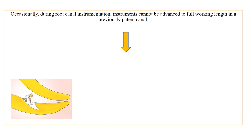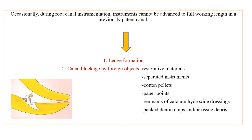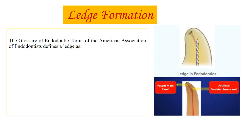You must have seen that when you are doing your root canal treatment, sometimes the instrument is going to the correct working length, but later on after two or three files your file is not advancing to its full working length. The cause could be ledge formation or canal blockage by foreign objects — like restorative materials, separated instruments, cotton pellets, paper points, or remnants of calcium hydroxide dressings, packed dentine chips, or tissue debris.